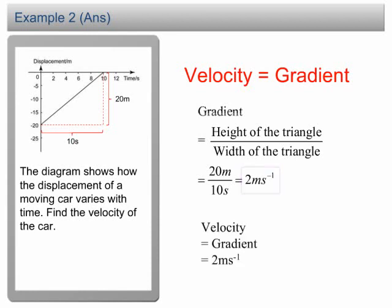The velocity is equal to the gradient, 2 meters per second. This example shows the velocity of a movement can be determined directly from the gradient of the graph.